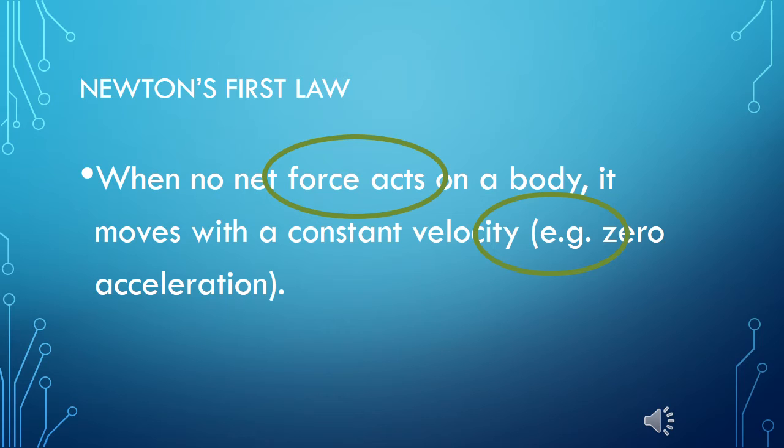So the common phrasing of Newton's first law as a body at rest tends to stay at rest and a body in motion tends to stay in motion could be more accurately rephrased as a body at rest tends to stay at rest, and a body in motion tends to stay in motion in the same direction and at the same speed unless acted upon by an unbalanced force. When we say unbalanced force, we mean that there's not another force with the same magnitude in the opposite direction so that the net force is equal to zero.